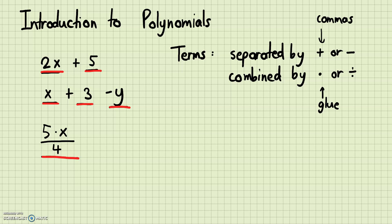If you look on the left here, this is one term — the 2 and the x are combined by multiplication, so this is one term. And this is another term. So we have two terms here, and these two terms are separated by the addition symbol. If the addition was multiplication instead, then the whole thing would be one term because multiplication would combine them. But since it's addition, we have two different terms.